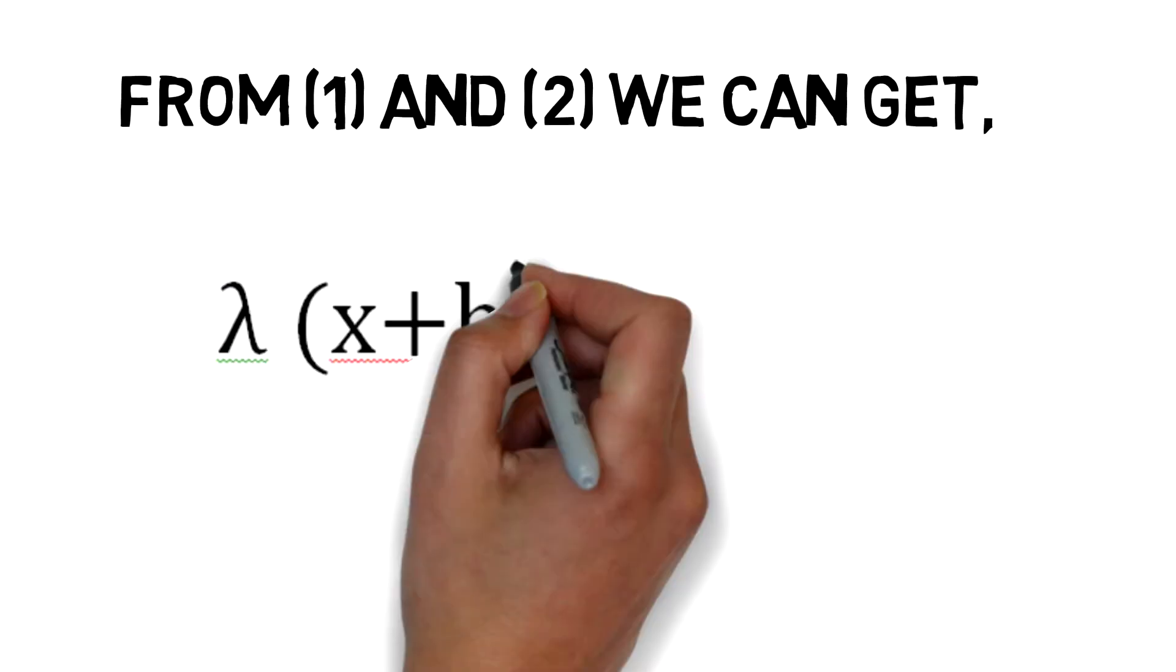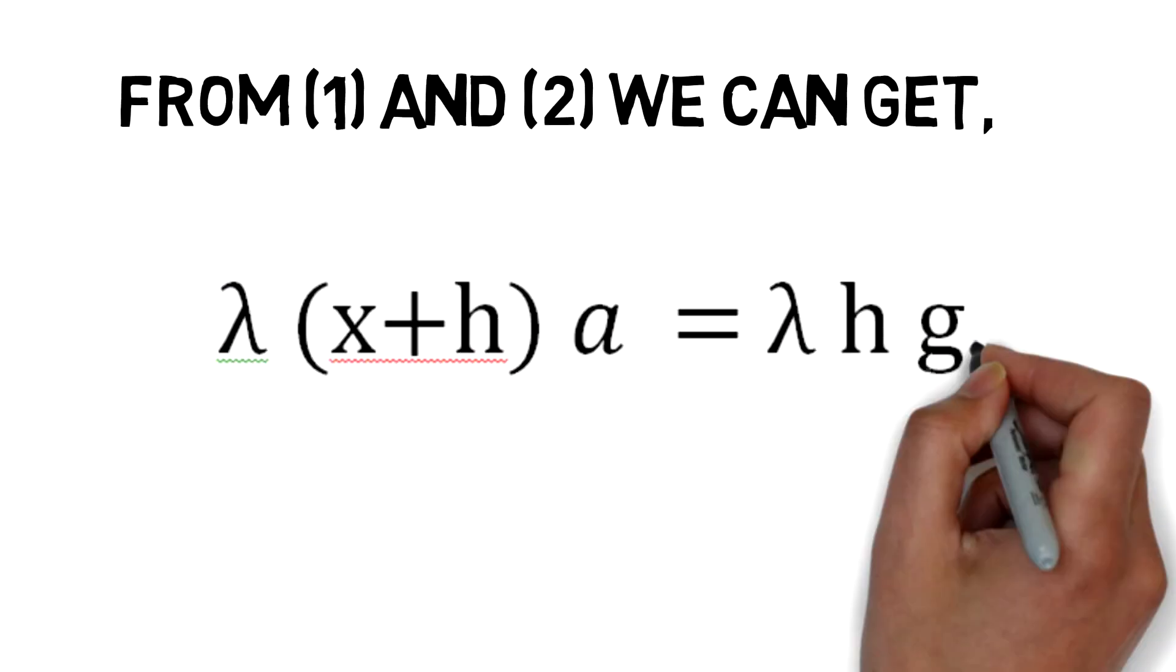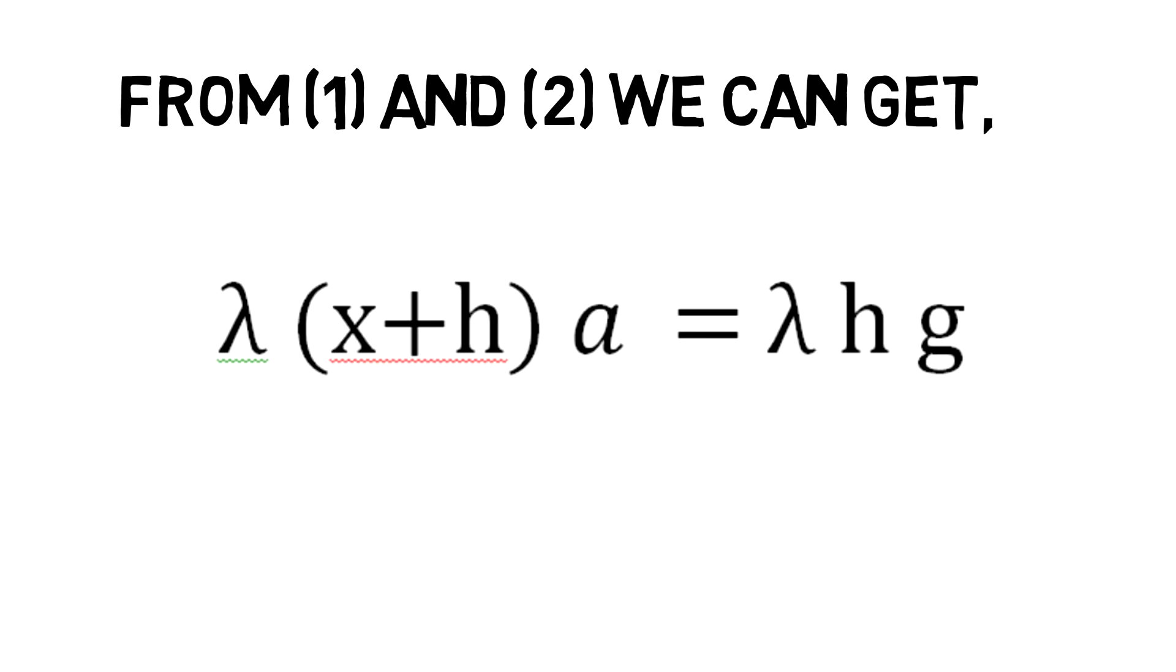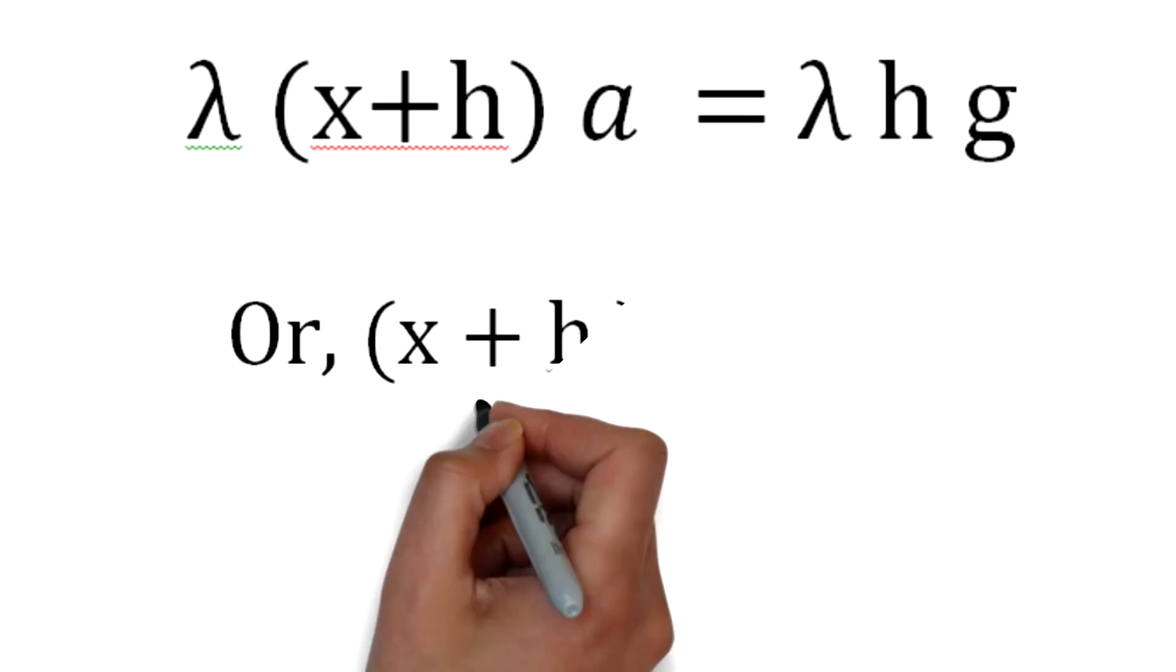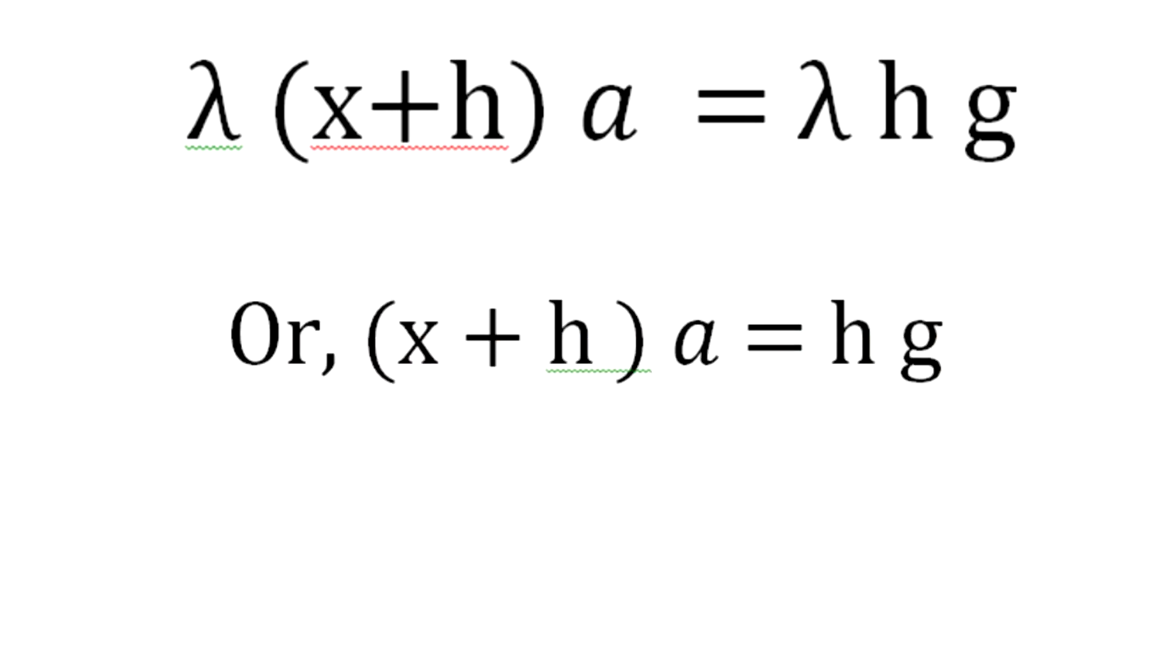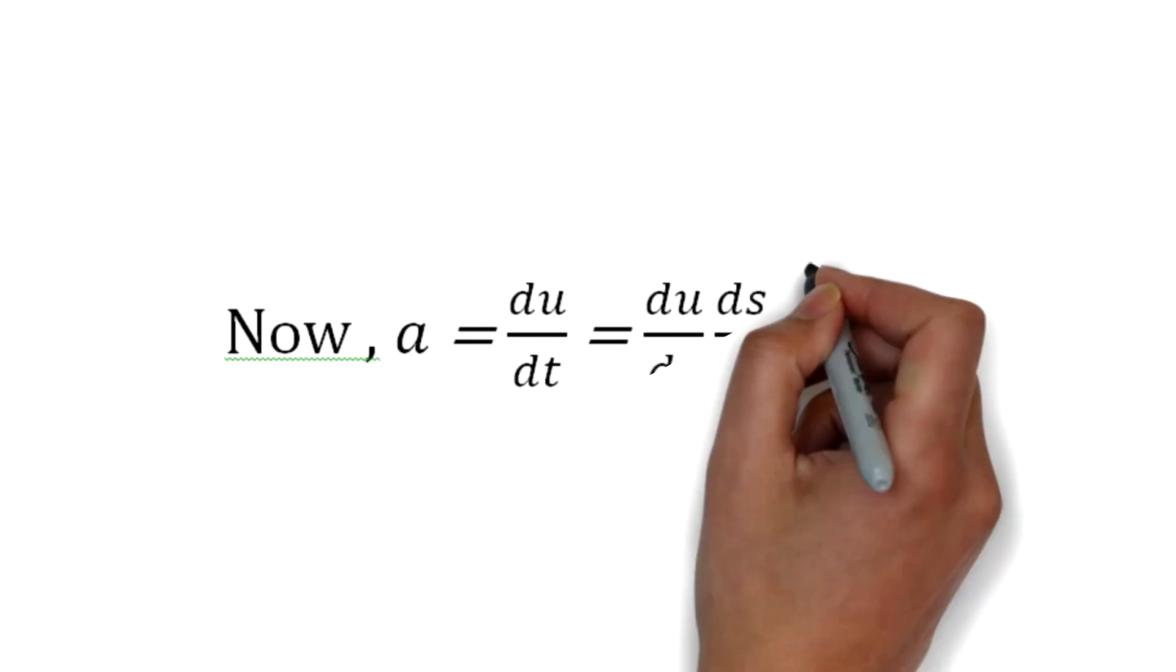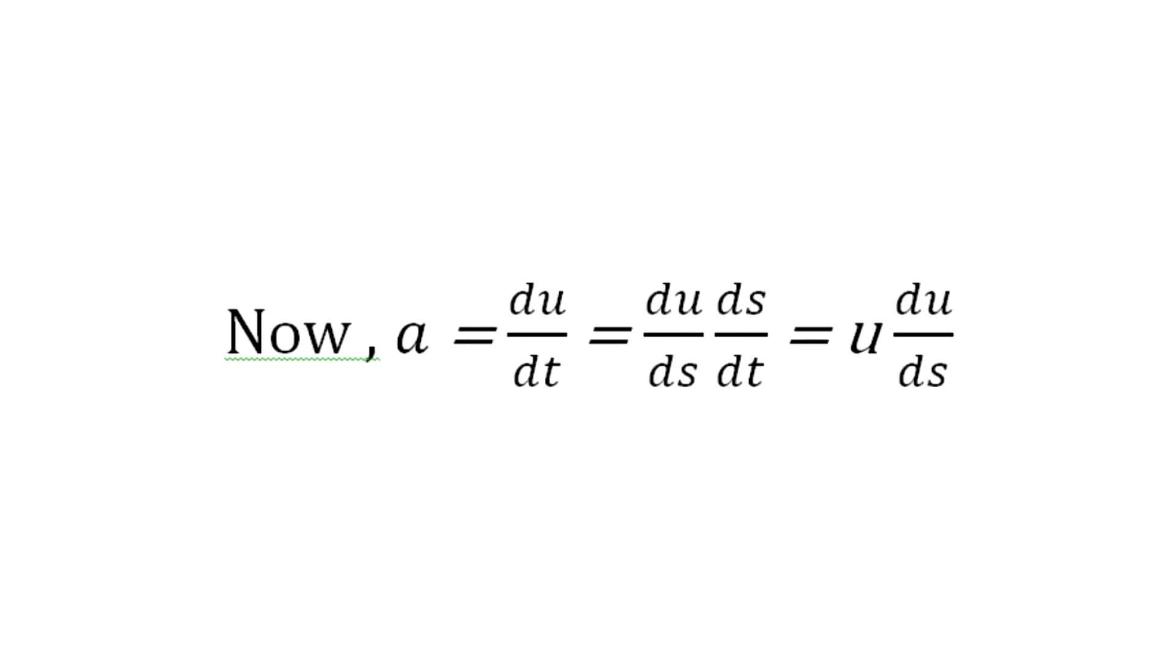Now from equations 1 and 2 we get lambda (x + h) a = lambda h g, or (x + h) a = h g. Now we know acceleration a = du/dt = (du/ds)(ds/dt) = u (du/ds).